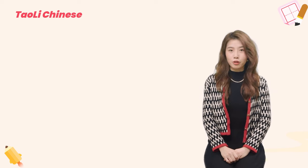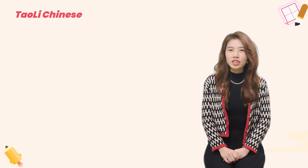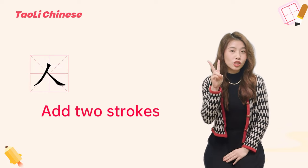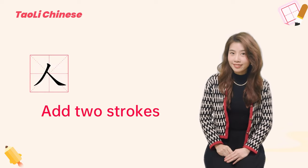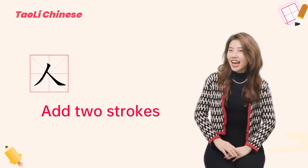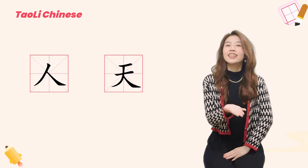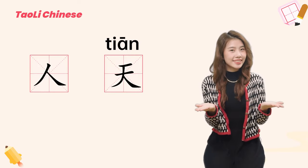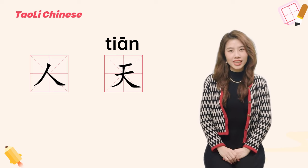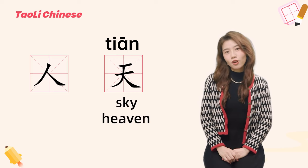Now let's make it more difficult. My question is: what character can be made by adding two strokes to 人? What would it be? The answer would be 天. 天 can be translated as sky, heaven, or day.